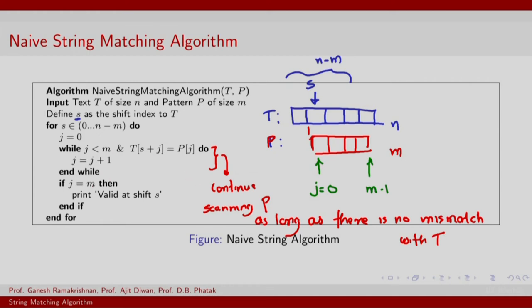Once you are at the end of P, you flag a match, print valid at shift S. That is what it means to have a match and we are interested in all matches and because of that we continue the scan. If we were not interested in all the matches, we could break right after printing the valid statement.